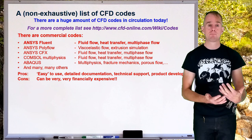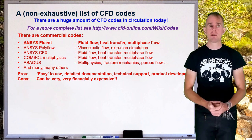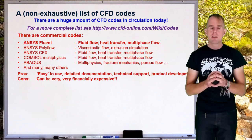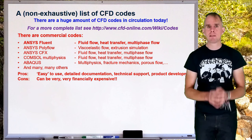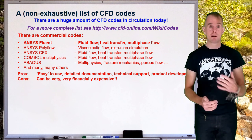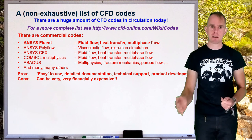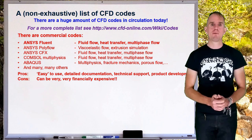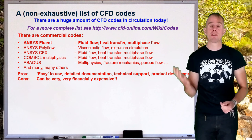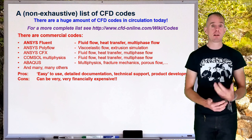Fluent isn't the only code out there. You've got specialist codes such as Polyflow, which is a computational rheology code. You've got CFX, COMSOL multi-physics, Abaqus, and many others. Typically, commercial codes are easier to use and better documented than their open source counterparts. You can get technical support, send an email or call a helpline, and there is a well-defined product development timescale. For commercial operations, these codes are very useful. Of course, the downside is their expense. For a solo practitioner or a research environment, sometimes the expense can simply be too great.